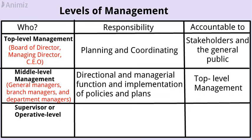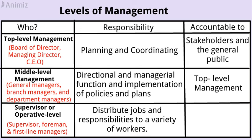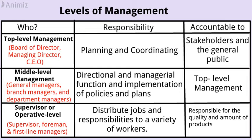3. Supervisor or operative-level management. Supervisors, foremen, and first-line managers are at this level. Their main role is to distribute jobs and responsibilities to a variety of workers. They are directly responsible for the quality and amount of products.